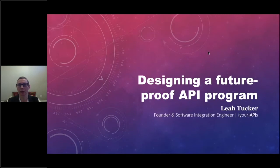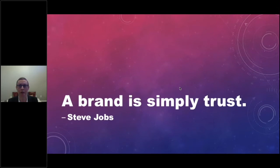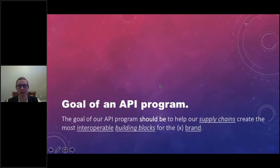Today I'll be talking about designing a future-proof API program, starting with the definition of a brand. As Steve Jobs put it, a brand is simply trust. We don't use that framing enough when talking about API products, because we don't think of our APIs as an extension of our brand. As we'll see in the following examples, disintermediated supply chains can disrupt the fabric of that trust, and the goal of our program should be to help our supply chains create the most interoperable building blocks for our brand.